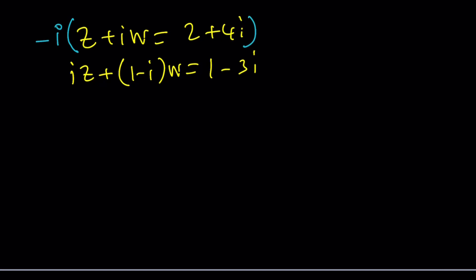That's going to give me negative IZ and I do have an IZ which is going to cancel out. So let's write the resulting equations. We get negative IZ and I'm going to multiply negative I by I. Remember that is negative I squared and I squared equals negative 1. So negative I squared is going to be positive 1, so we're just going to get W from here.